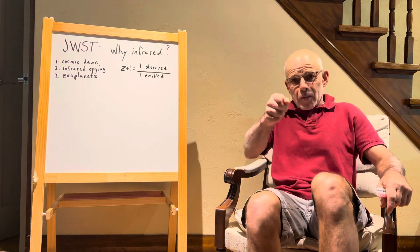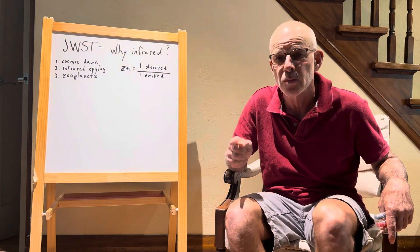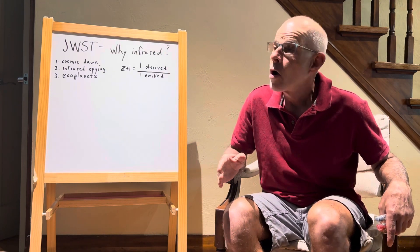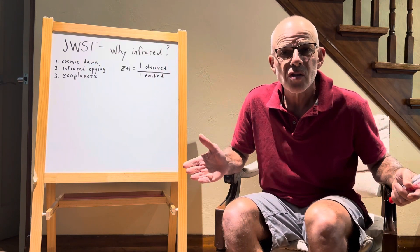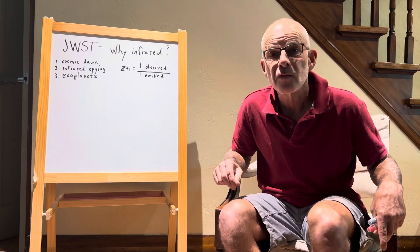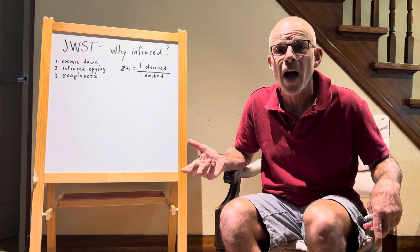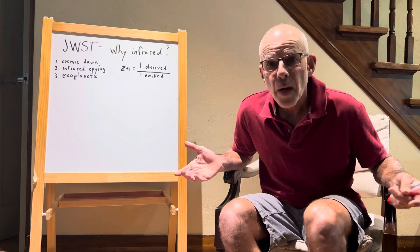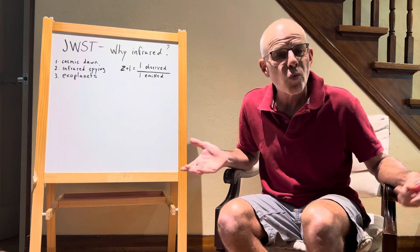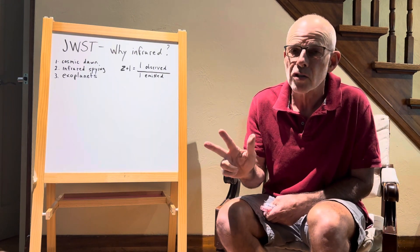Hi, it's Romeo Bruni again. Welcome to the astronomy channel. One of my favorite topics: the James Webb Space Telescope. The James Webb Space Telescope is an infrared-sensing telescope. Why infrared? If we were to actually look at the images that the James Webb Space Telescope is seeing, we would not see them because the light being perceived is in the infrared region. There are three major reasons why it does that, and we're going to go through them today.